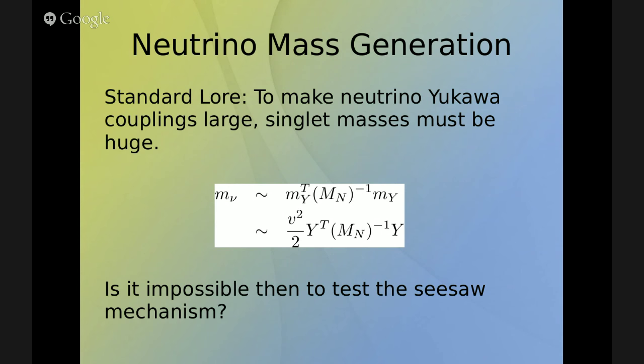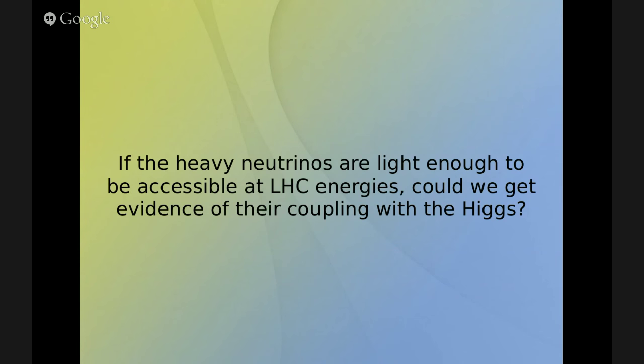We are going to argue that this is not the general case. There are specific models, specific realizations of the model, where you can actually have light masses and large couplings too. So the question is, if these heavy neutrinos are light enough to be produced at LHC energies, then is it actually possible to measure their coupling with the Higgs boson? This is the main objective of this work.